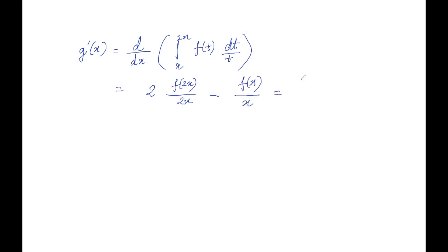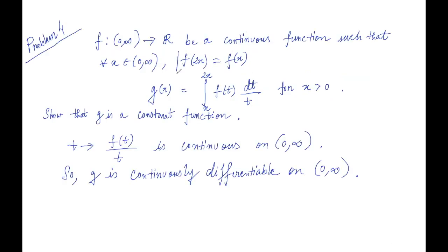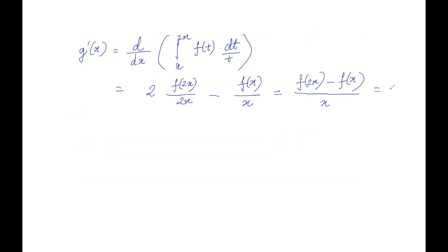And this is nothing but f(2x) minus f(x) over x. And you know that we have been given f(2x) equals f(x), and so this is equals to zero. And so G is a constant function.